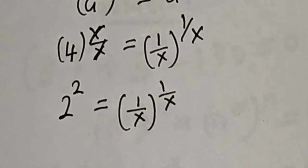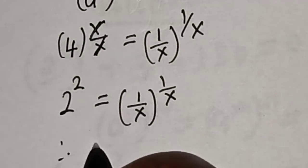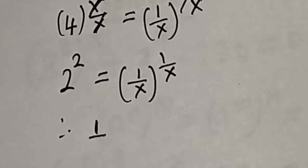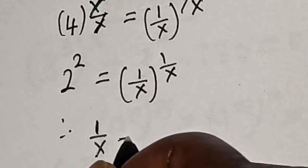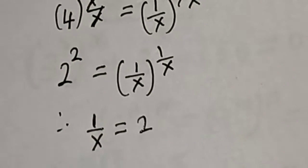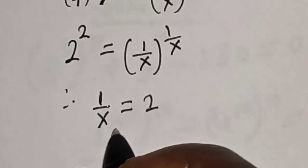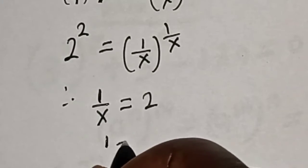this equals 2. Therefore, 1 over s is equal to 2. Now let's cross multiply: 1 is equal to 2 multiplied by s.